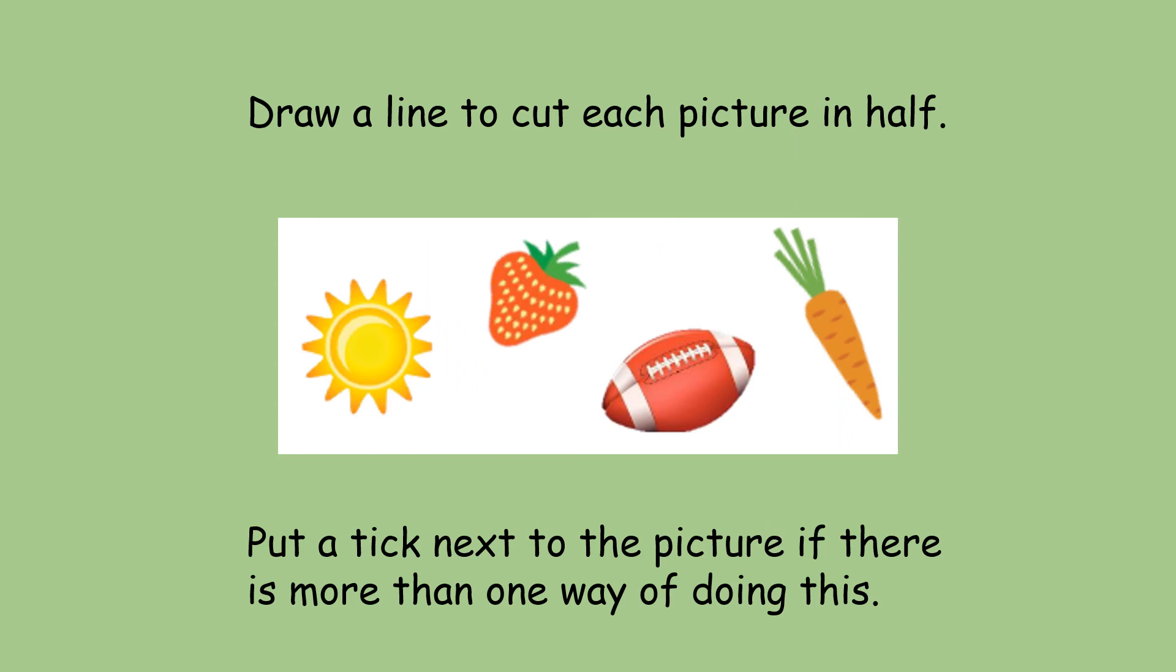Finally, look at these pictures. You've got a sun, a strawberry, a rugby ball and a carrot. Can we draw a line to cut each picture in half? And then let's put a tick next to the picture if there is more than one way of doing this.